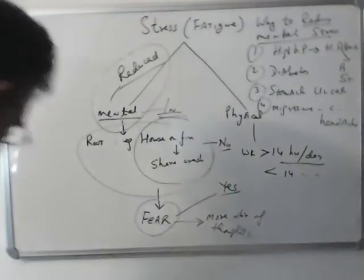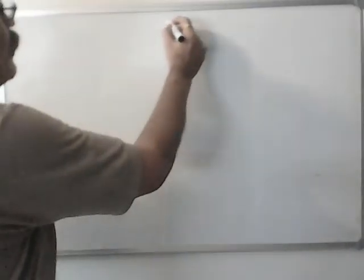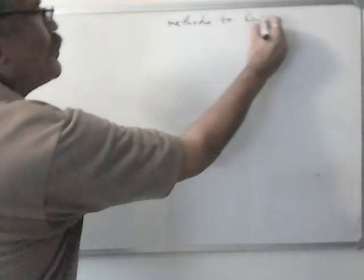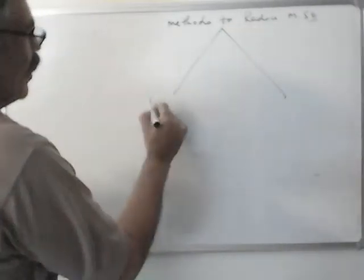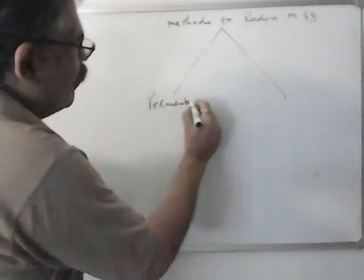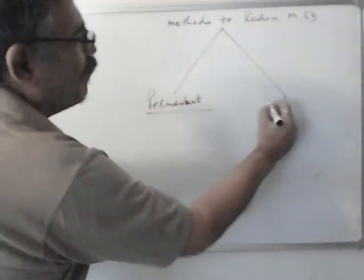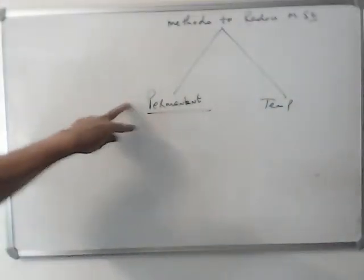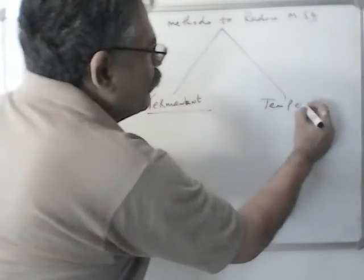So there are two or three methods to reduce mental stress. One is a permanent method and the other one is a temporary method. So we should go for the permanent method. But first let us discuss the temporary method.